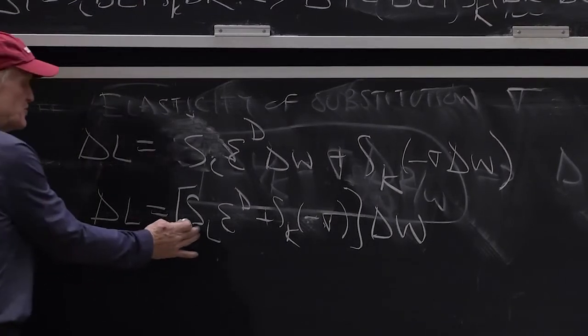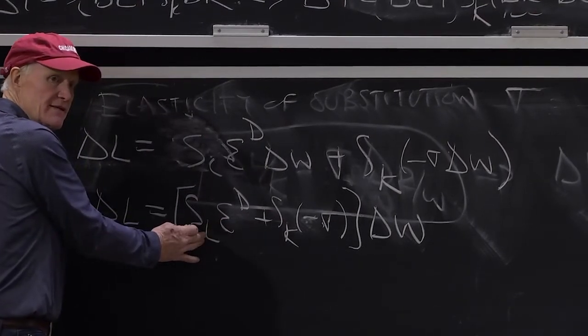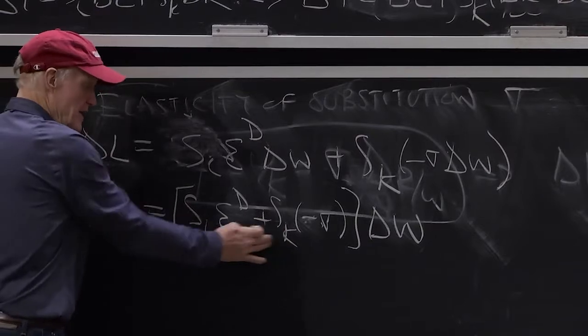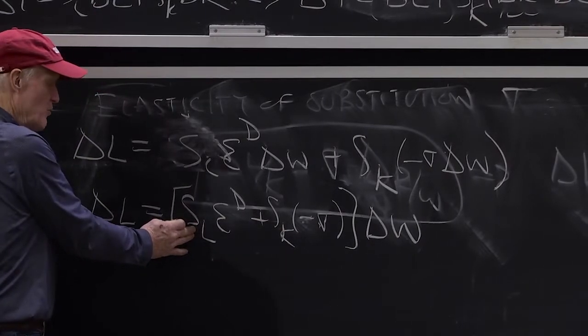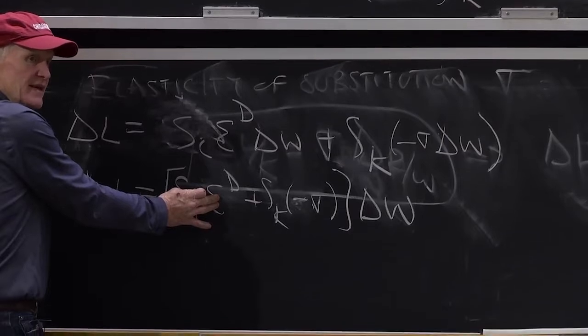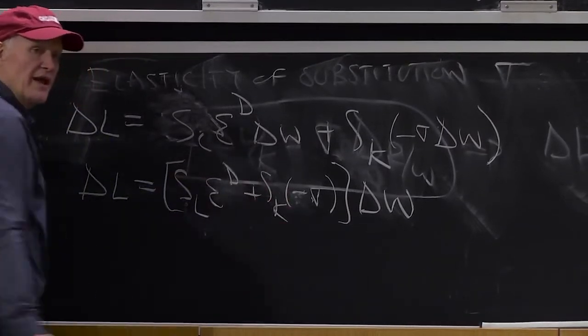It's a weighted average of two elasticities, right? These weights sum to one. It's a weighted average of the output demand elasticity and the substitution elasticity.